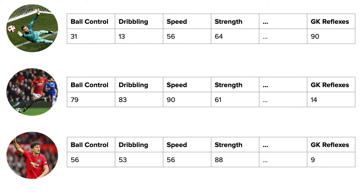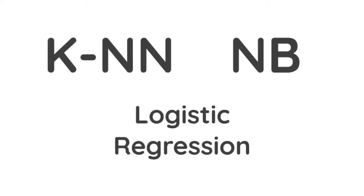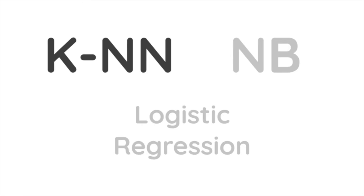But how do we do it? As the coach of Manchester United, you decide to use machine learning for classification, and we have proposed K-nearest neighbours, naive Bayes, as well as logistic regression. For the ease of visualisation, we will use two attributes — ball control and goalkeeping reflexes — and classify two positions: goalkeeper and striker. First, we have K-nearest neighbours, also known as KNN.